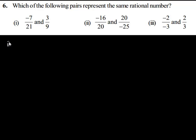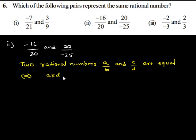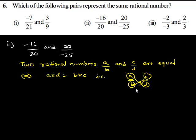The second question is negative 16 upon 20 and 20 upon negative 25. Two rational numbers a upon b and c upon d are equal if and only if a times d is equal to b times c. That is, the product of the numerator of the first with the denominator of the second, and the numerator of the second with the denominator of the first rational number, must be equal.